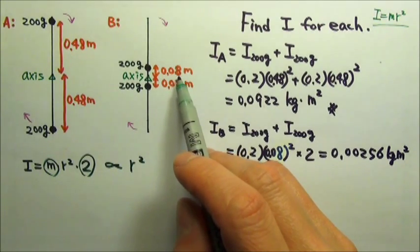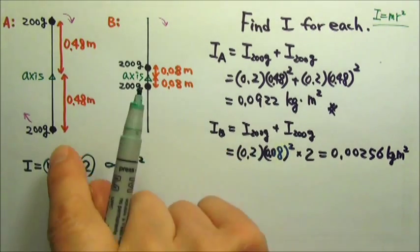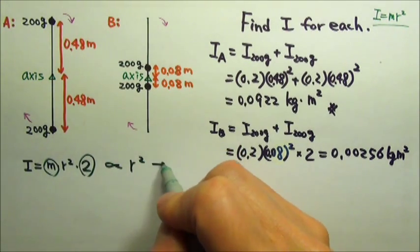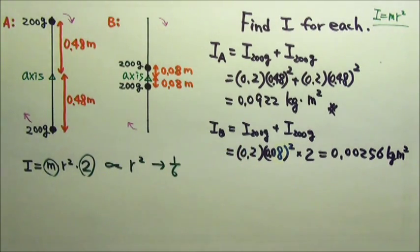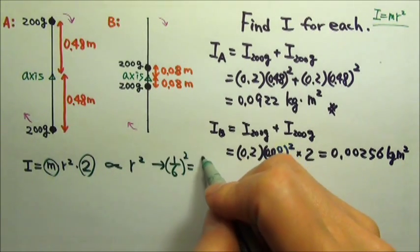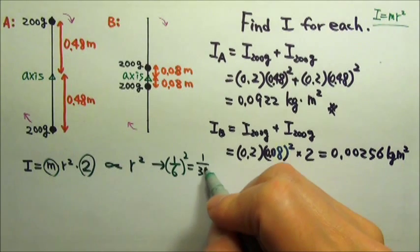This one, the r is 0.08 meters, which means this one is 1/6 of that. If r changes by a factor of 1/6, after you square this, you can see that I is only 1 over 36.